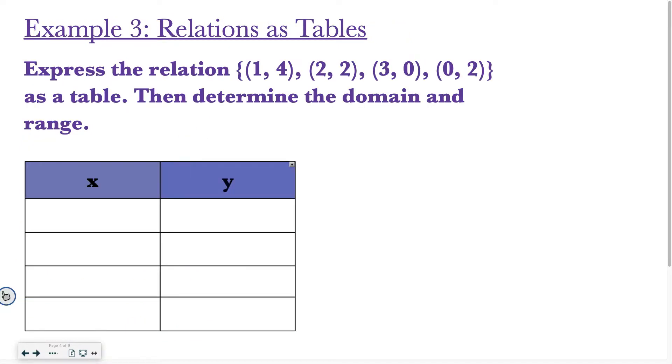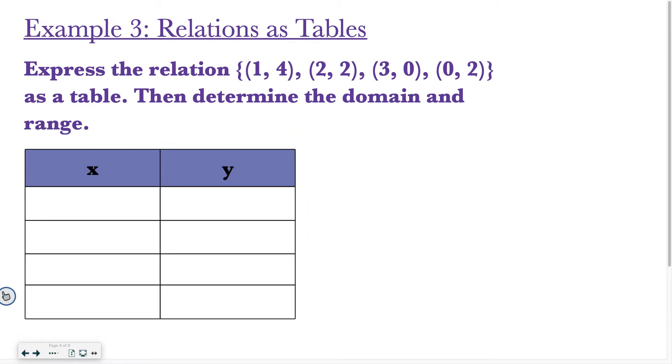All right, example 3. Let's talk about expressing relations as tables, and then we want to determine the domain and range. So the first thing, a relation, is when you have a set of ordered pairs, and when you want to express them as a table, basically all you're doing is breaking them up into their x and y. So what I'm going to do is I'm going to start with my first x. I have a 1. My second x, I have a 2. Then I have a 3. And I have a 0. That's all I'm going to do for the x part.